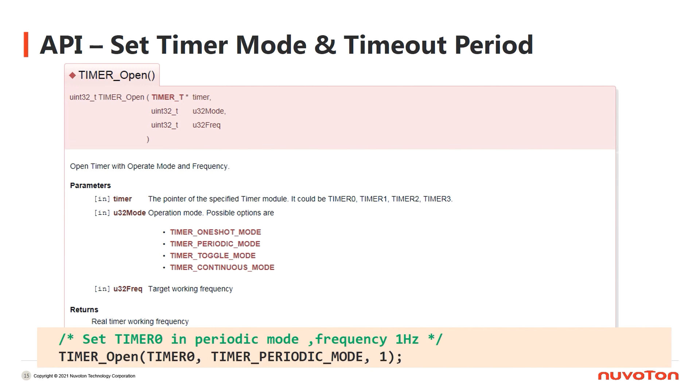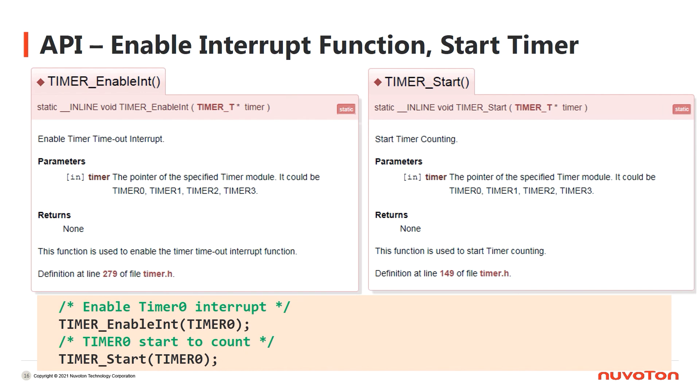You can use the API provided by our BSP to set the counting mode of a timer. The API is TimerOpen. You can set the counting mode and frequency of a timer by this API. It will set related registers automatically by given parameters. For example, in the line below, we set Timer0 in Periodic mode and the frequency is 1Hz. When the value of the counter reaches the value of the comparator, an interrupt will be triggered. However, you have to enable this behavior by calling TimerEnableInterrupt function. After you enable the interrupt of a timer, an interrupt will then be triggered when timeout. The API, TimerStart, is used to start the counting of a timer. After it is called, the timer starts to count up.